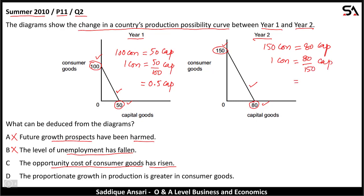This equals 0.53 capital goods. So the opportunity cost of making one consumer good has increased from 0.5 capital goods to 0.53 capital goods. C is the correct answer.